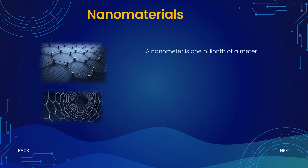Nanomaterials are materials having one of their dimensions in the range of nanometers. If we talk about the conversion into meter scale, 1 nanometer is equal to 10 to the power minus 9 meters. Materials having their dimensions in that range are considered as nanomaterials.